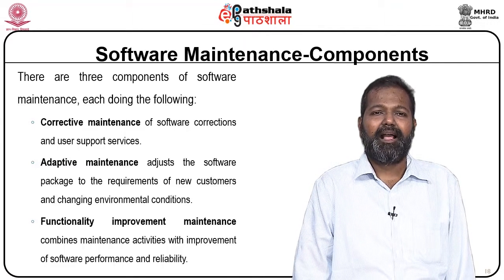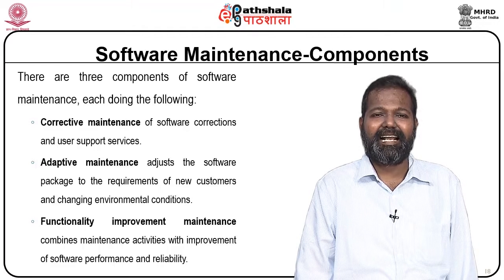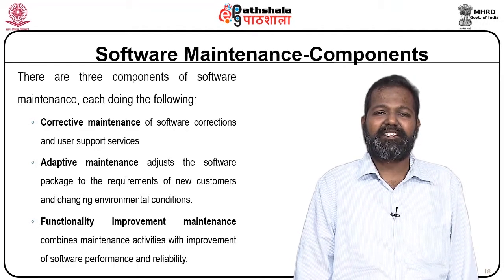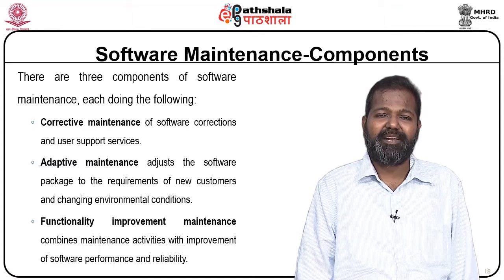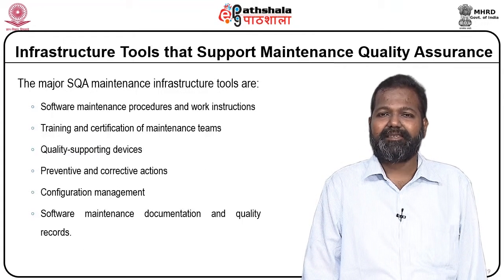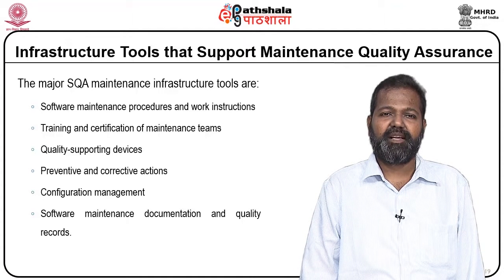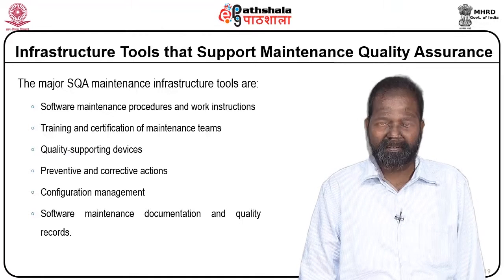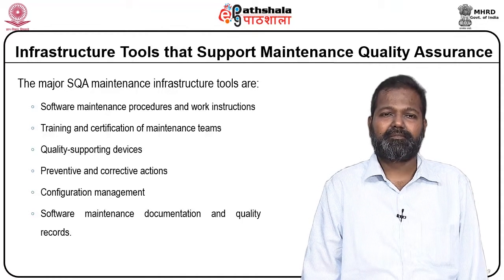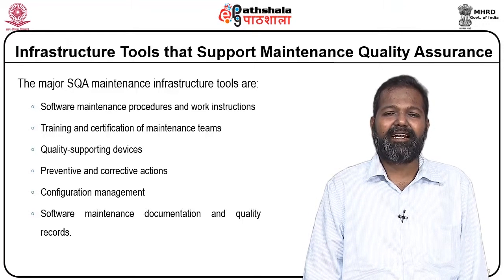Corrective maintenance handles software corrections and user support services. Adaptive maintenance adjusts the software package to the requirements of new customers and changing environmental conditions. Functionality improvements maintenance combines maintenance activities with improvement of software performance and reliability. The major software quality assurance maintenance infrastructure tools are: software maintenance procedures and work instructions, training and certification of maintenance teams, quality supporting devices, preventive and corrective actions, configuration management, software maintenance management, maintenance documentation, and quality records.